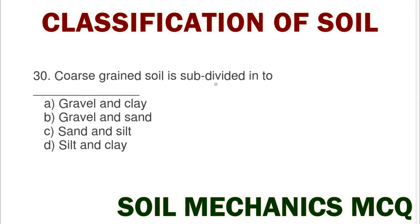Next question: coarse grained soil is subdivided into option A gravel and clay, option B gravel and sand, option C sand and silt, option D silt and clay. The correct answer is option B gravel and sand.